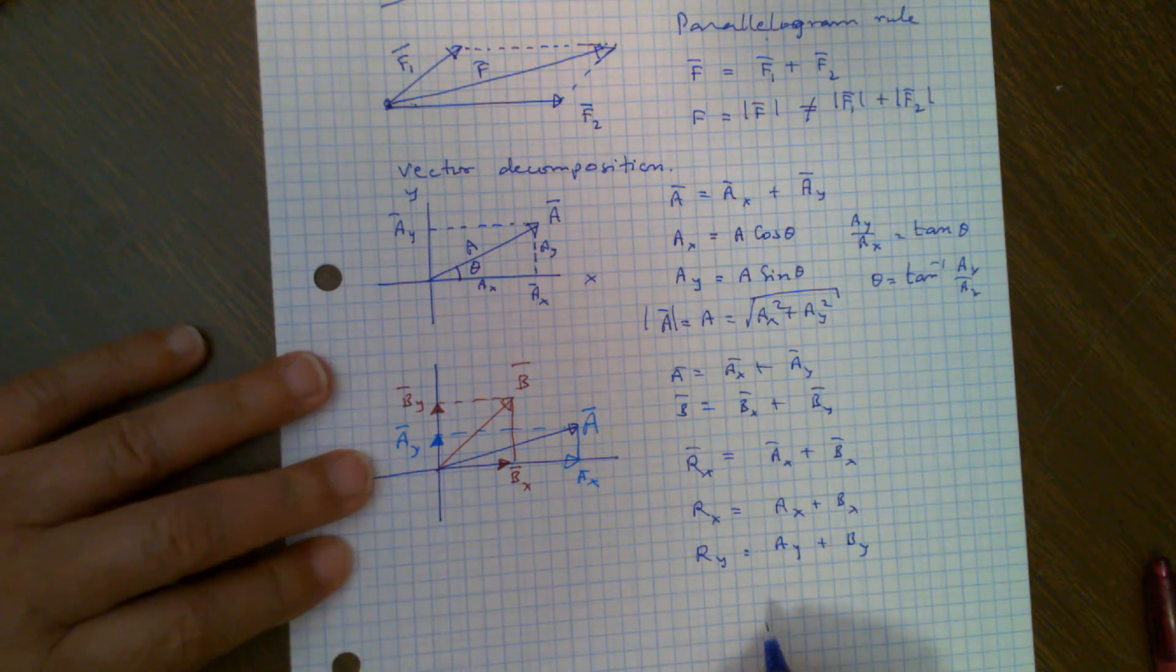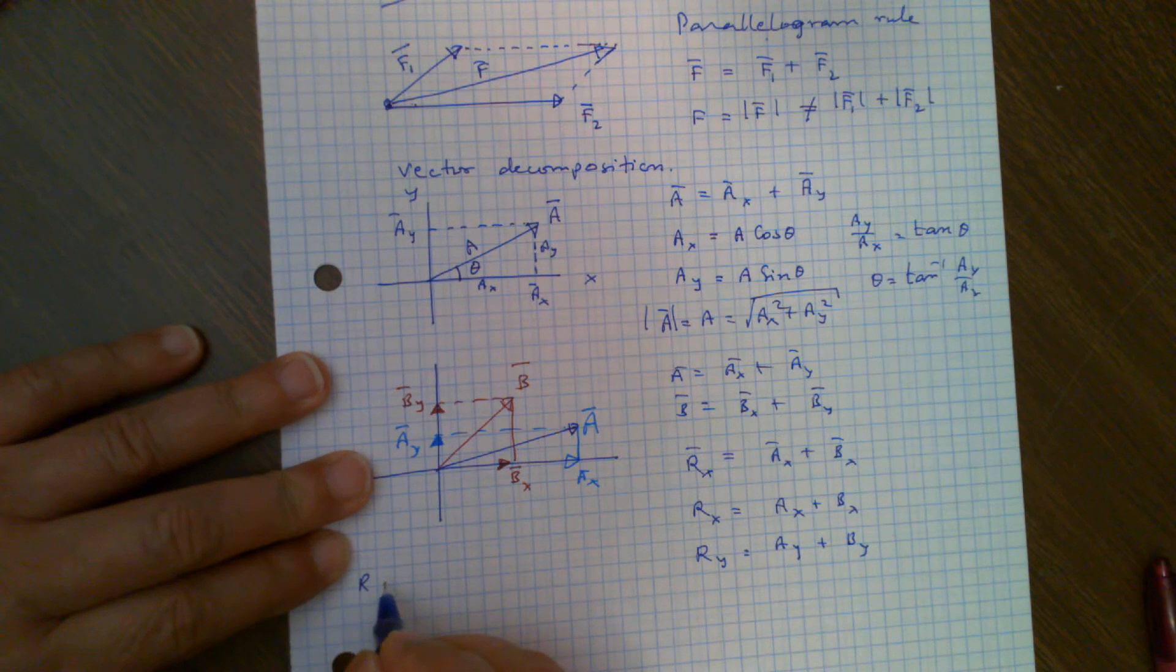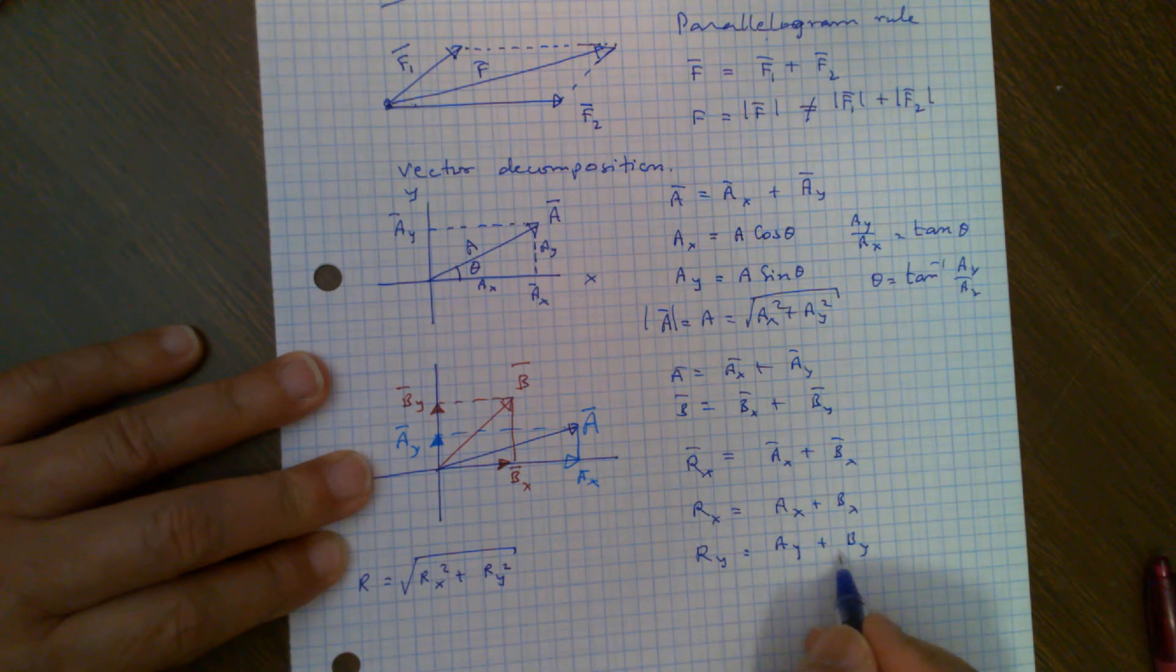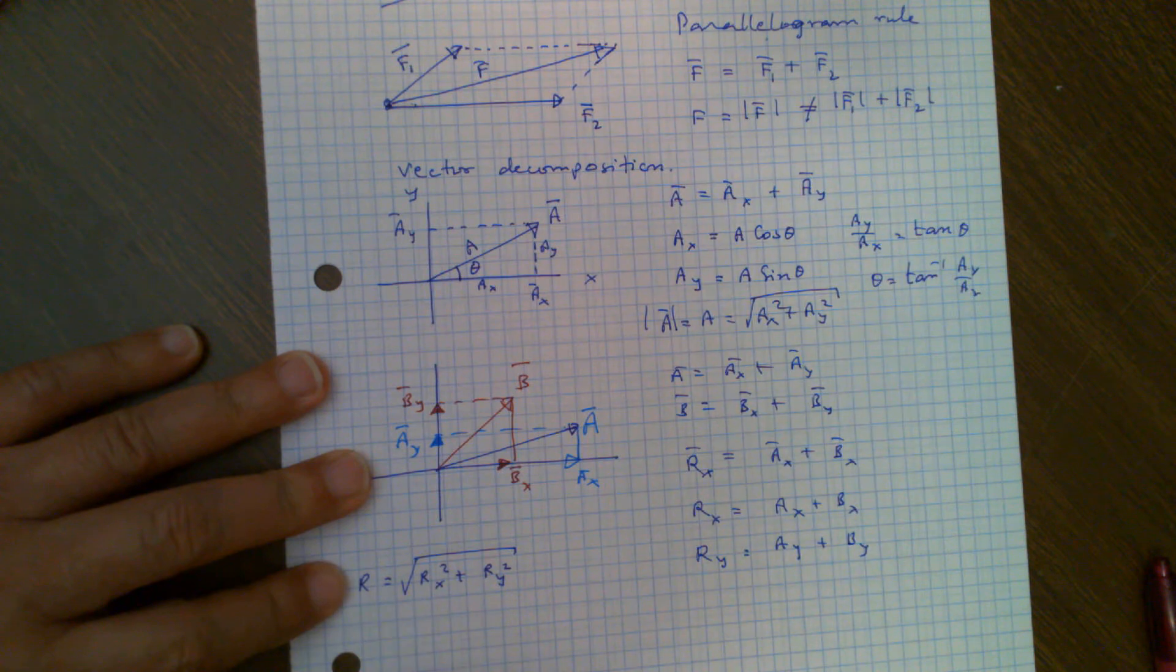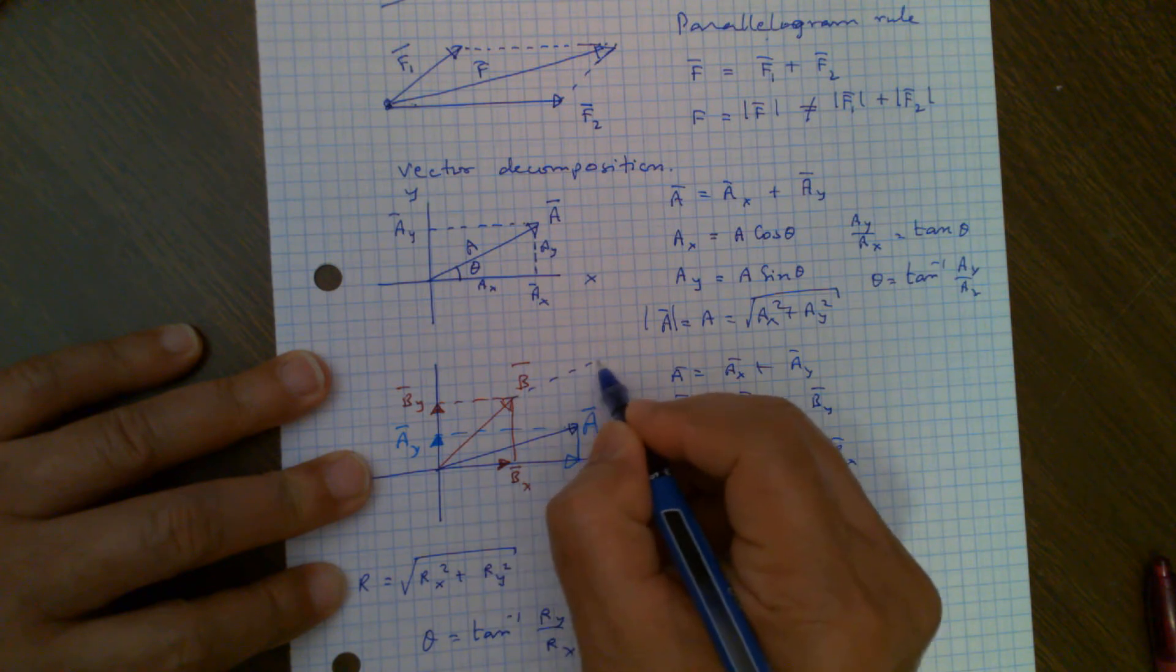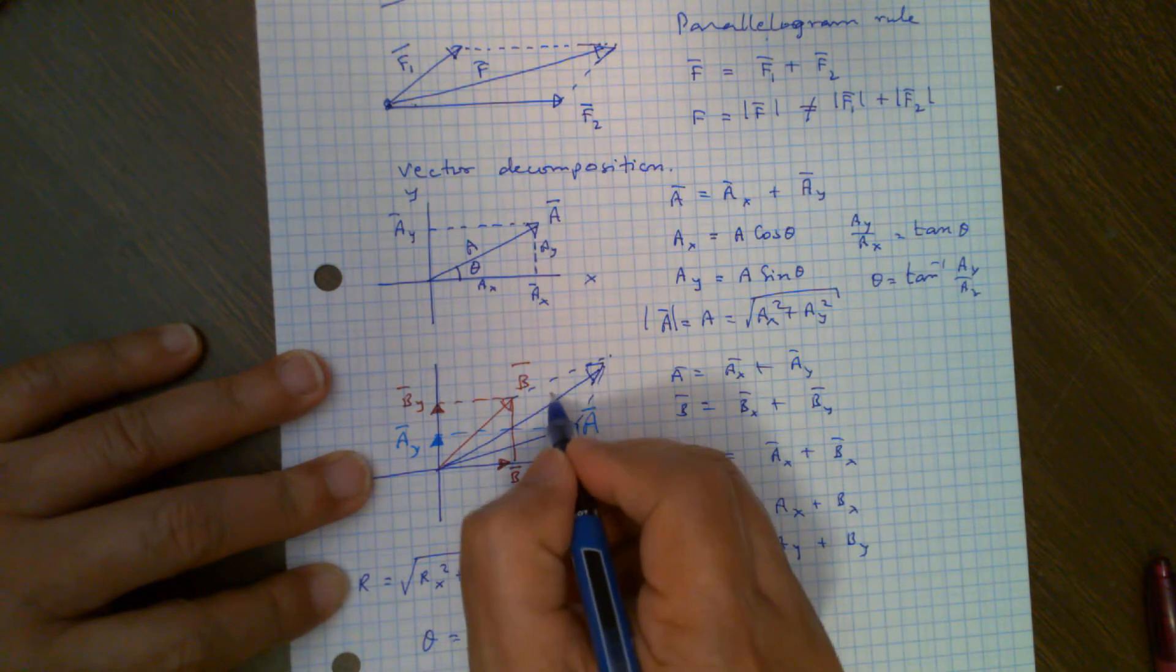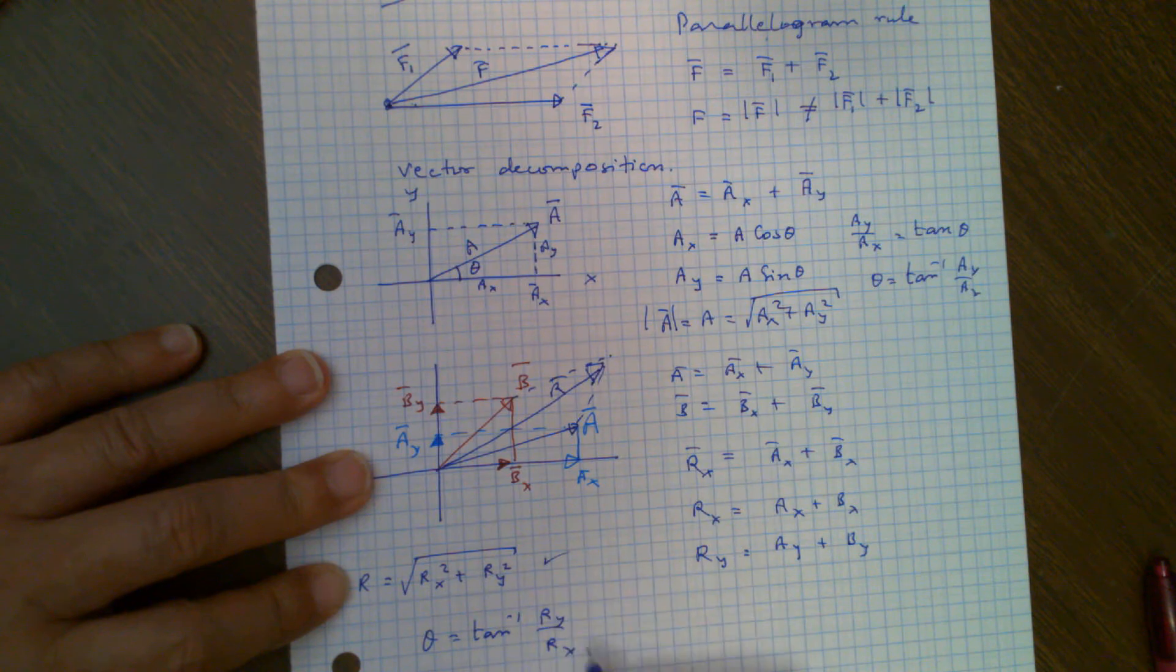So what is the net resultant vector R? Magnitude of R will be square root of RX squared plus RY squared, where we have already found RX and RY. So then we can get the magnitude of R. Now, what about the angle of this vector? Then theta will be tangent inverse RY by RX. So if we have to draw it, it will be like this. And this will be your net resultant vector R. And this is the magnitude. This will be the direction.